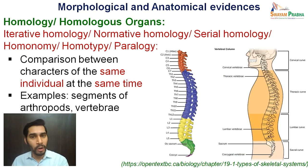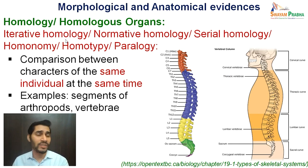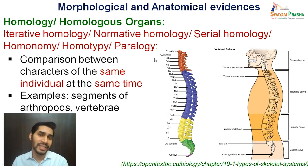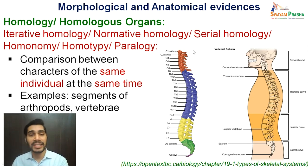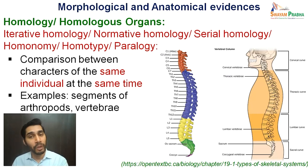Moving ahead to serial homology — as mentioned, this is present in the same organism. Different names have been given for serial homology: iterative homology, normative homology, serial homology, homonomy, homotypy, paralogy, and so on. Here the comparison is between characters of the same individual at the same time — not between different species, not at different time points, but the same individual at the same time. The example shown is of the vertebrae — they appear similar, have common origin, but perform slightly different functions, and are present in the same organism.